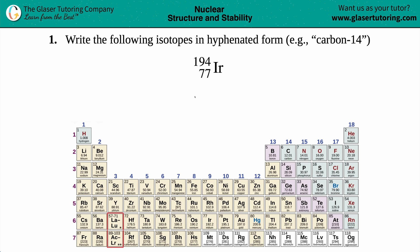Number one, write the following isotopes in hyphenated form. The example they give us is carbon-14. Our example has 194 on the top, 77 on the bottom, and IR as the element.